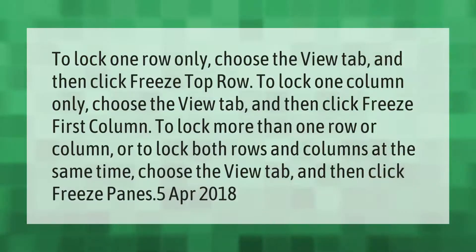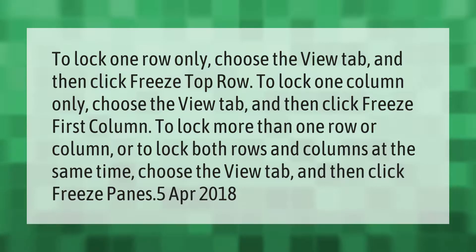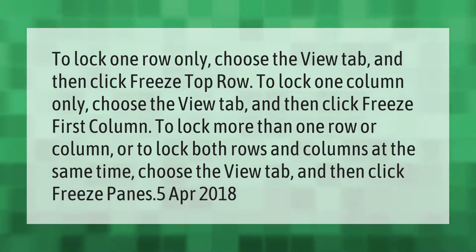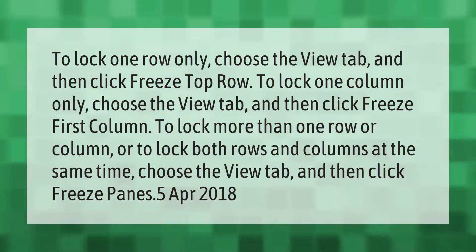To lock one row only, choose the View tab and then click Freeze Top Row. To lock one column only, choose the View tab and then click Freeze First Column. To lock more than one row or column, or to lock both rows and columns at the same time, choose the View tab and then click Freeze Panes.